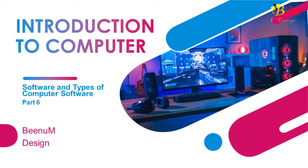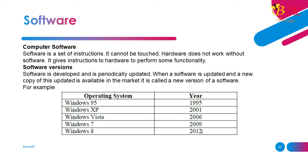Part 6: Software and Types of Computer Software. Software is a set of instructions — it cannot be touched, and hardware does not work without software. It gives instructions to hardware to perform some functionality. Software versions: software is developed and periodically updated. When a software is updated and a new copy is available in the market, it is called a new version of the software.